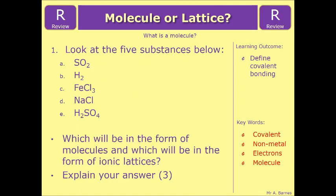Okay, hopefully that's helped you with the molecule and lattice section. So let's have a look at the review question, which is look at the five substances below: SO2, H2, FeCl3, NaCl, and H2SO4. Which will be in the form of molecules and which will be in the form of ionic lattices? So separate them out into two and then explain why you've come to that conclusion.